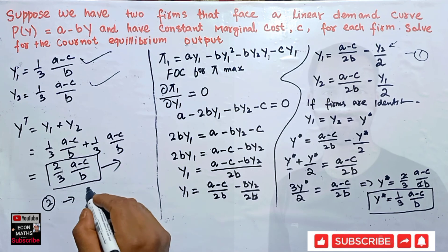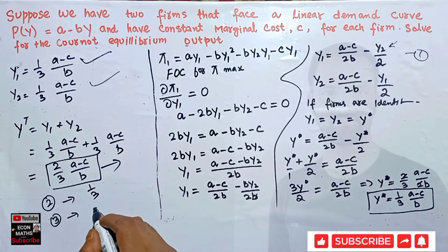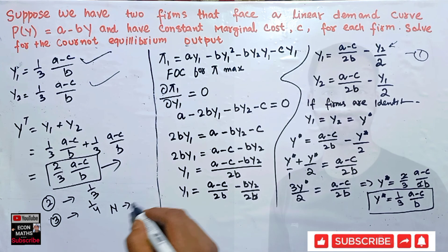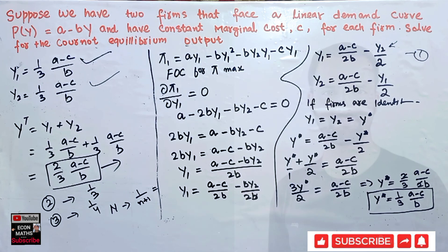In general, with n firms, each firm produces 1/(n+1) of output. I hope this was clear. I will try to make a more detailed video on the Cournot model. If you want to support the channel, you can donate via the PayPal account listed in the YouTube channel info. Thank you.